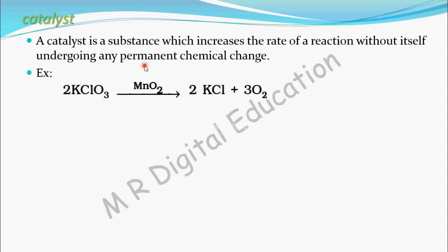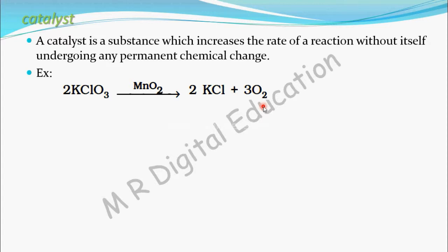For example, in the decomposition of potassium chlorate into KCl and oxygen, this reaction is faster only in the presence of catalyst MnO₂. In the absence of this catalyst MnO₂, this reaction is very slow.